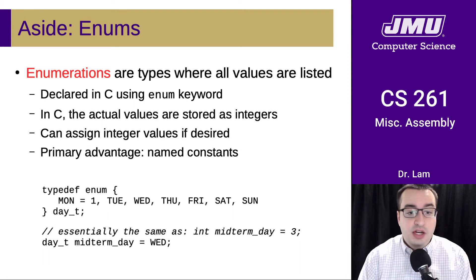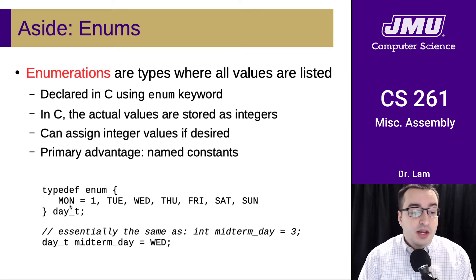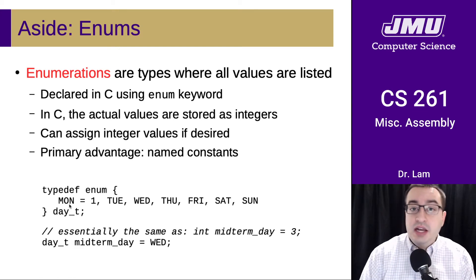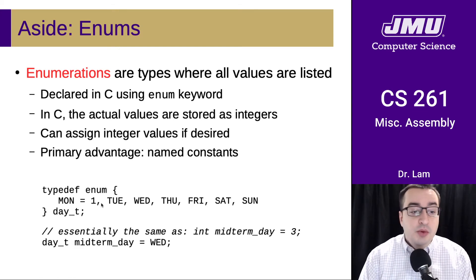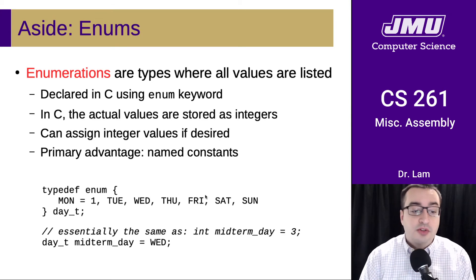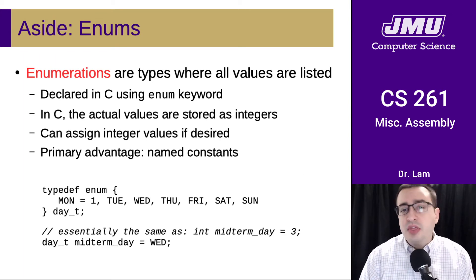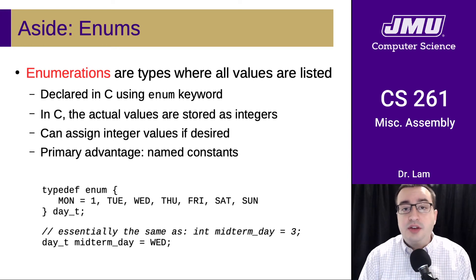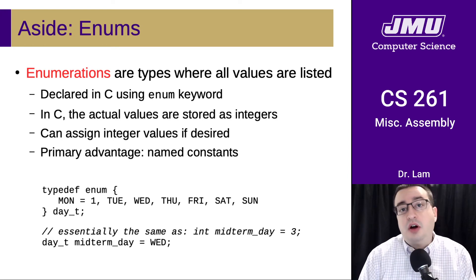So here we're creating an enum called dayT, and we are saying that Monday, MON, is going to be 1, which means that Tuesday will be 2, Wednesday will be 3, and Thursday will be 4, and so forth. The primary advantage here is that we can just use these named constants instead of using the raw numbers.